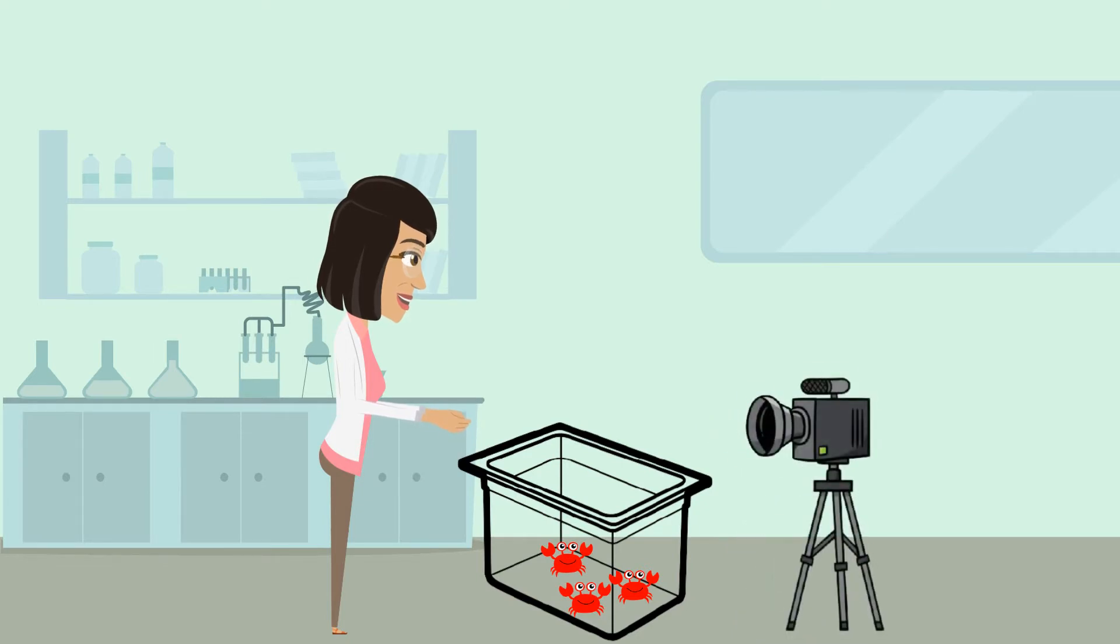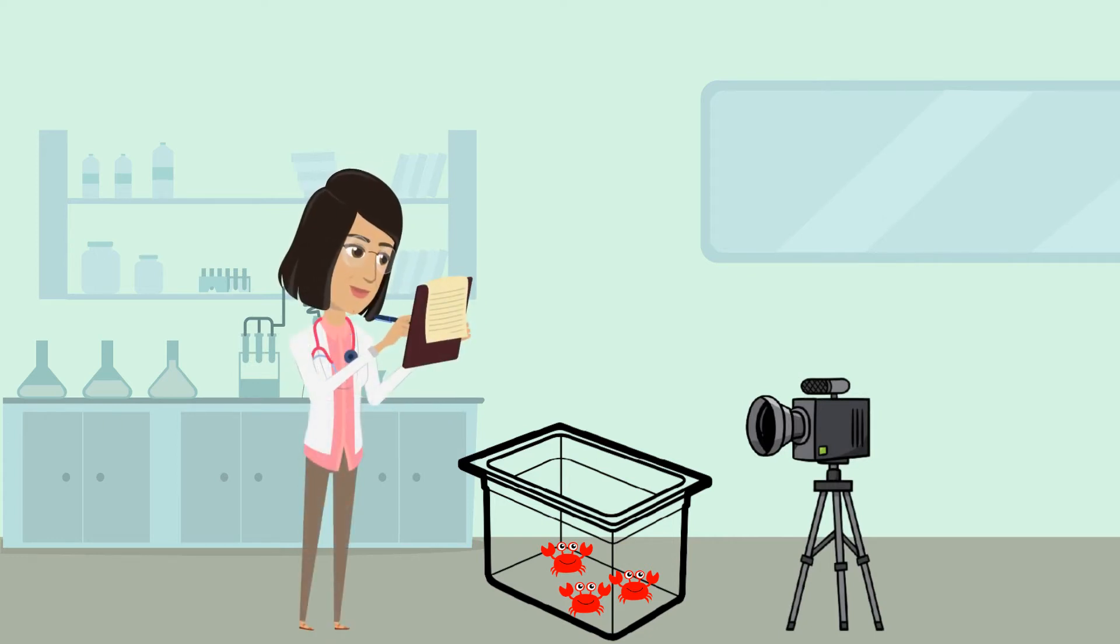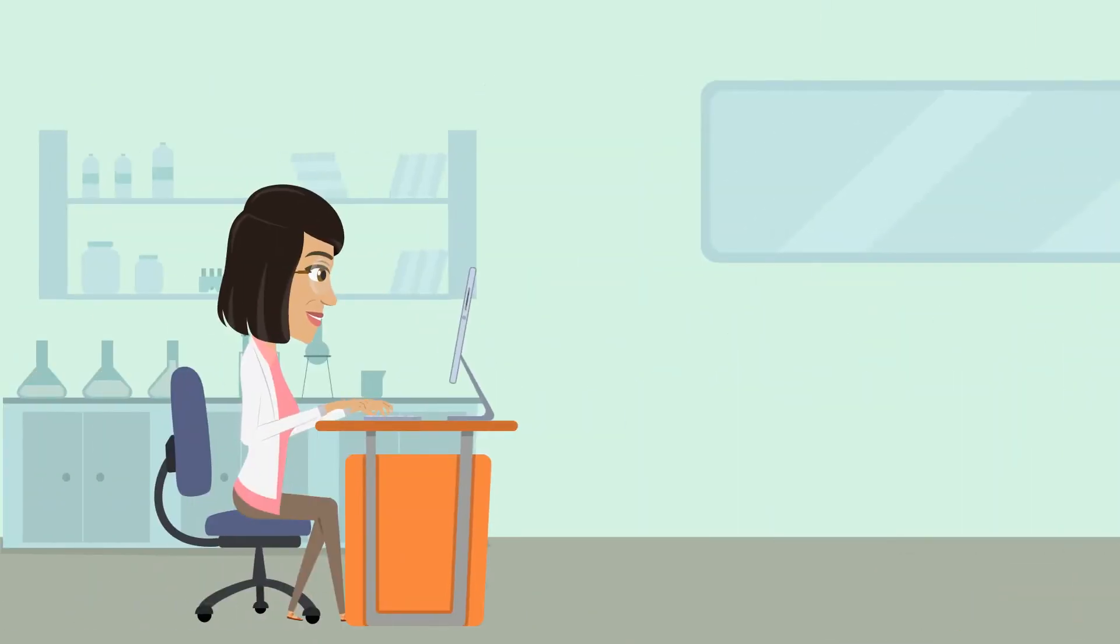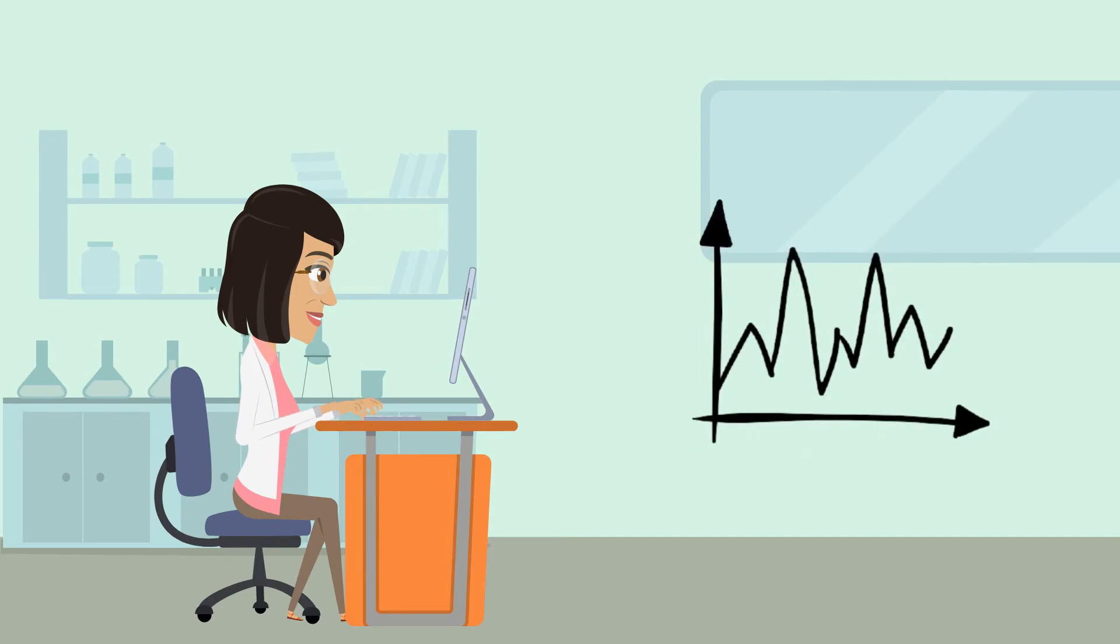A camera is placed next to the aquarium to take a photo of the crabs every minute. I then apply different artificial light sources to the crabs to see how this alters their behavior and movement patterns. After each experiment, I download the images of the crabs and run them through a special computer program. I can then visualize this data on a graph to see how individual crab movement changes over time with different light sources applied.